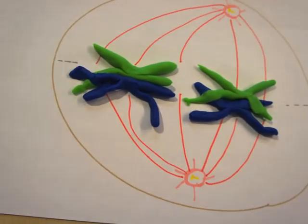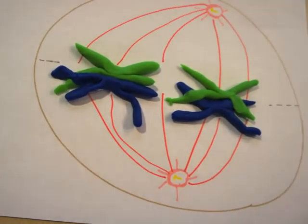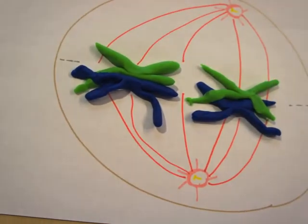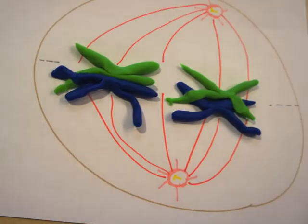Metaphase I is similar to the mitotic metaphase in that the chromosomes, in this case the tetrads, align along the metaphase plate. Crossovers, where homologous pairs of sister chromatids overlap in exchange, form recombinant chromosomes.